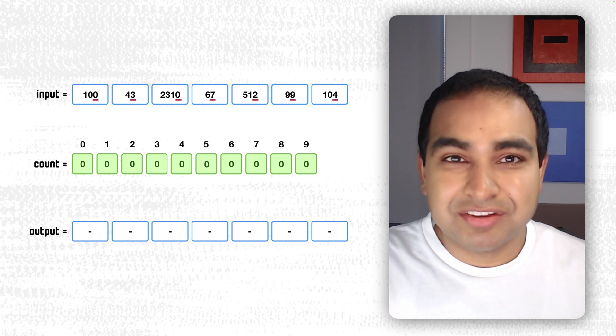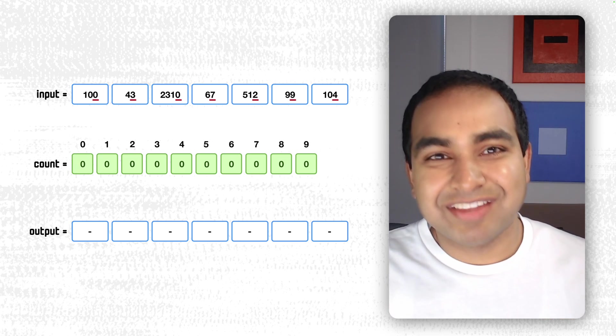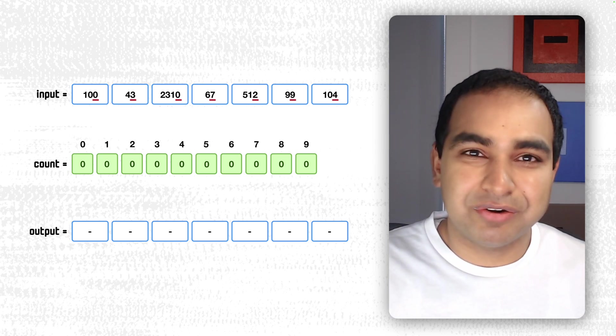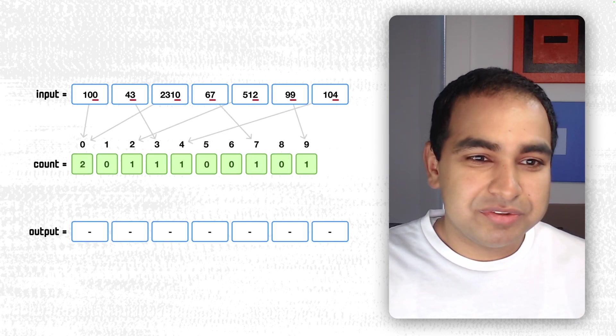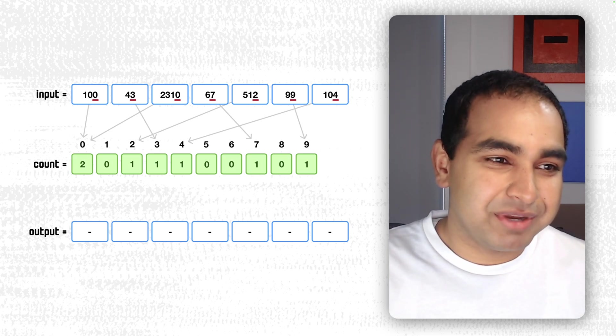So if we were to walk through how that would work, let's say we're sorting by the ones digit, and of course we're using Counting Sort to make that happen. We do the traditional setup of how Counting Sort works. We have an input array, we have a count array, and an output array.